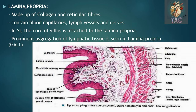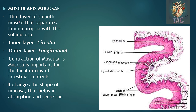Next to the epithelium is the lamina propria — a loose connective tissue with high cellularity. It contains a large number of lymphoid tissue forming the GIT-associated lymphoid tissue. It contains blood vessels, lymphatic vessels, and nerves. In the small intestine, the core of the villus is attached to the lamina propria, where you can see a central lacteal capillary in the core of the villus as well. Next is the muscularis mucosa — a thin layer of smooth muscle that separates the lamina propria from the submucosa. These are inner circularly arranged and outer longitudinally arranged muscles. Contraction of muscularis mucosa is important for local mixing of the intestinal contents and changes the shape of mucosa to help in absorption and secretion.